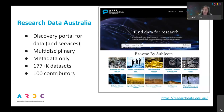That's available as an advanced search option, and we've also got a map search for location-based searching. While this search is focused on the data, you can switch in the advanced search option to search for services connected with that data. So if you wanted to search over the services we have registered with metadata in Research Data Australia, you can do that in our advanced search.